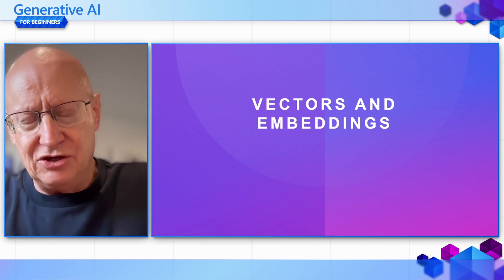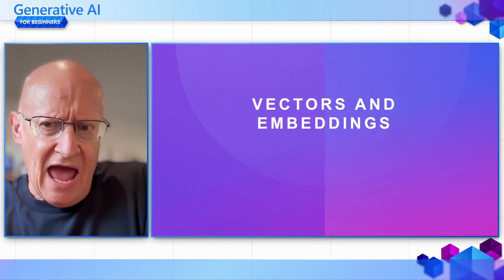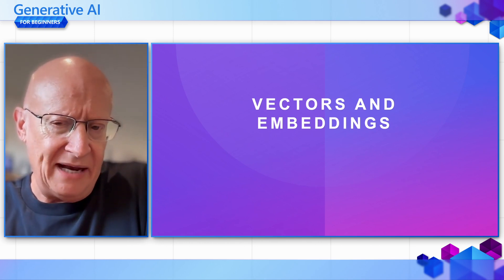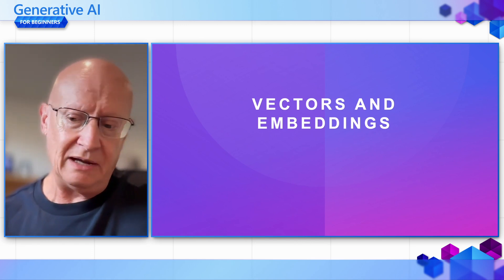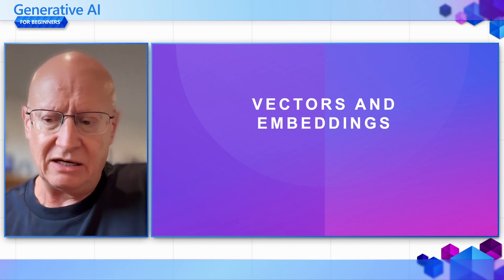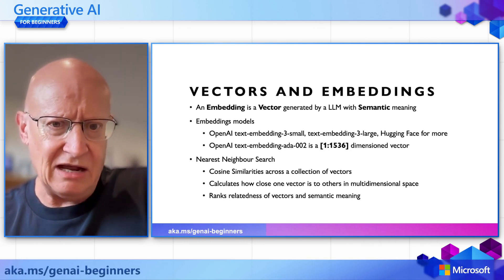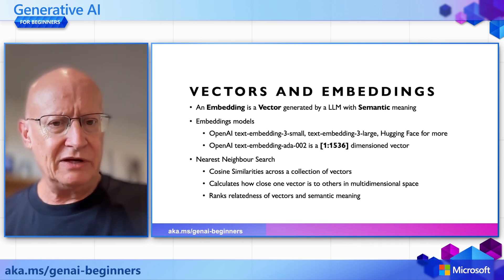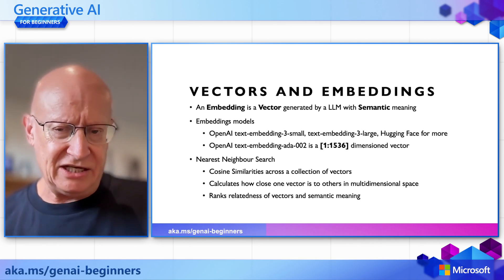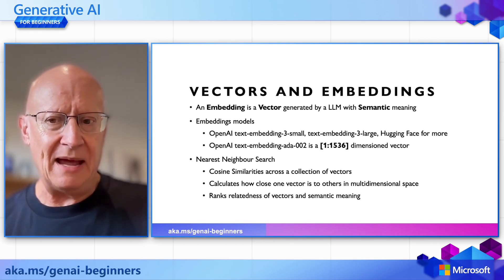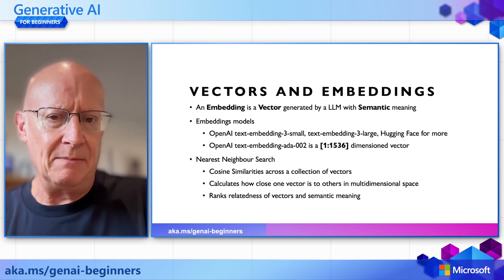You've heard about the term vectors — you may have learned about those in school. You might have heard the word embeddings and wonder what the difference is, because they're often used almost hand in hand. An embedding is a special type of vector that is generated by a large language model and has semantic meaning. When you send a piece of text to an embedding engine, it returns a vector that represents the semantic meaning of that text.